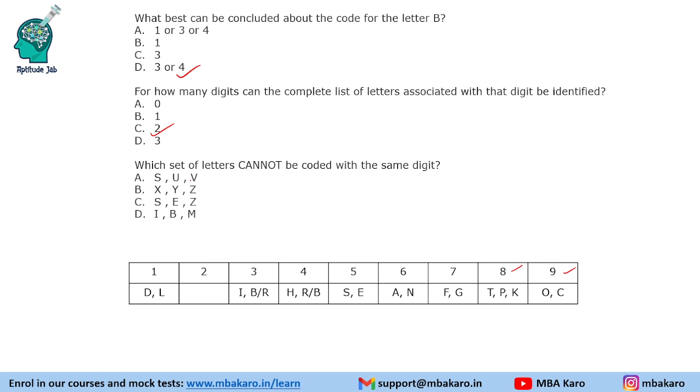S is for 5. We cannot have U and V here because we have already used 2 of the letters. So we cannot form these using the same digit. XYZ. We may have XYZ possible here. It is not necessary. It is saying cannot be coded. So others may be coded. So it may be by 2. SEZ. S and E are present in 5. So again Z may be in 5.